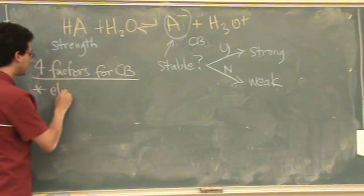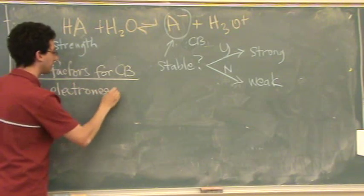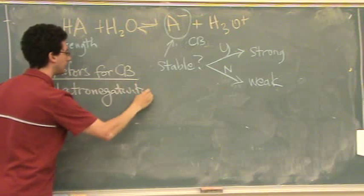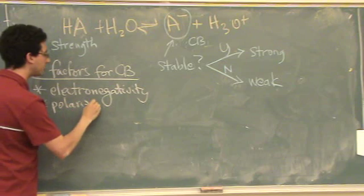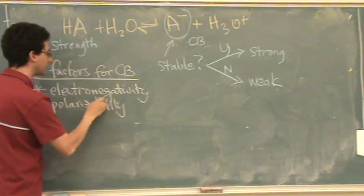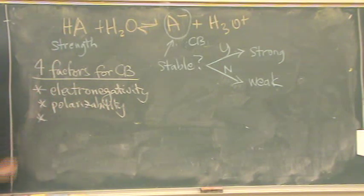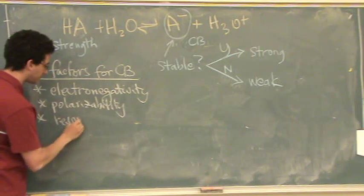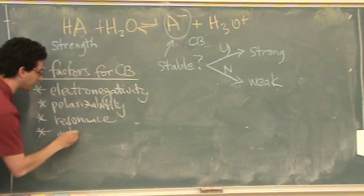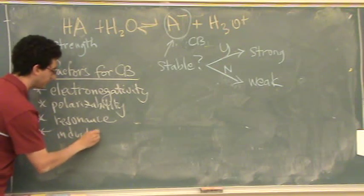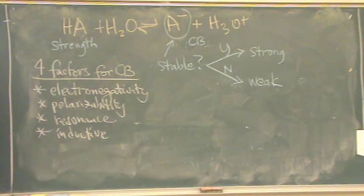Here's the four factors. Factor 1, electronegativity. Factor 2, polarizability. You should have heard that word before. I used it earlier in the quarter. Resonance, that you saw in 2a. And then inductive. This factor you have not seen before, but it's related. Inductive is related to electronegativity. These are the four factors to tell you if something's stable or not.